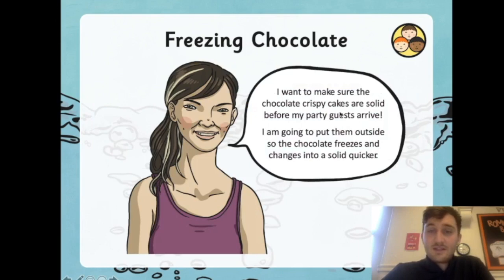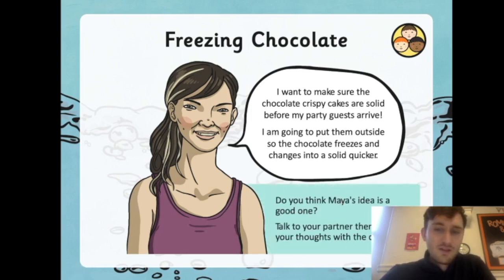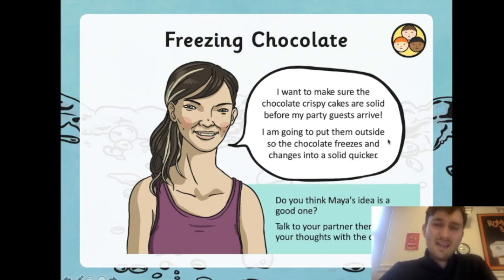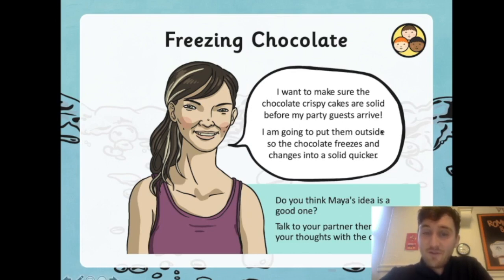Maya wants to make sure the chocolate crispy cakes are solid before her guests arrive, so she's going to put them outside so the chocolate freezes and changes into a solid quicker. Do you think Maya's idea is a good one? Well, I don't think outside would be the best idea — maybe if she put them in a freezer or a fridge, that might be a little bit better.